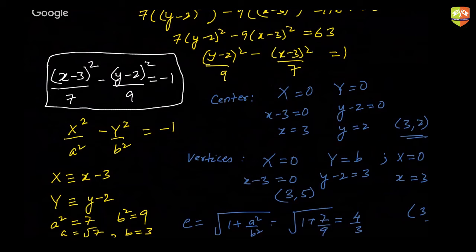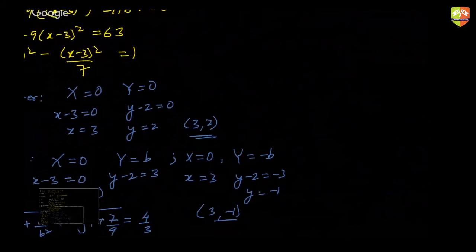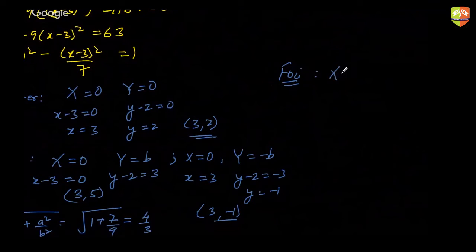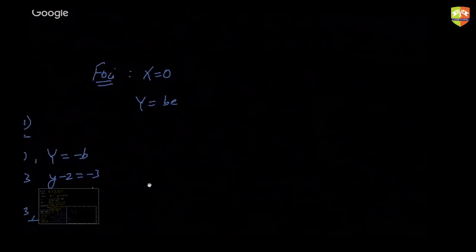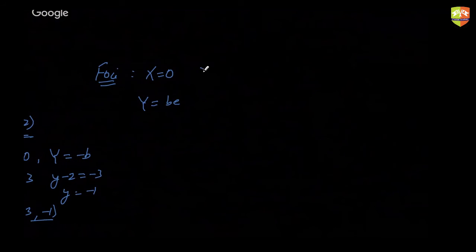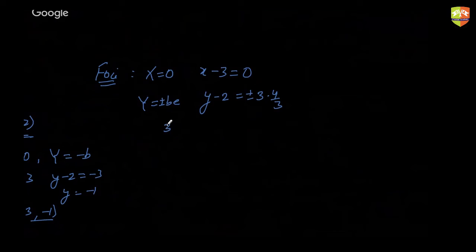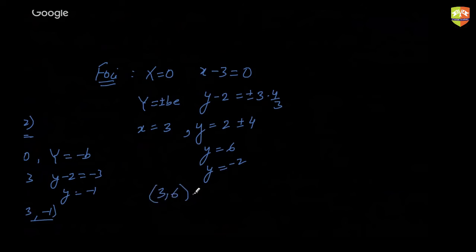For foci: Y = ±be, so y − 2 = ±3 × (4/3) = ±4, with x = 3. Therefore foci are at (3, 6) and (3, −2).